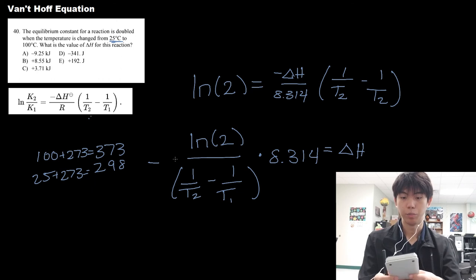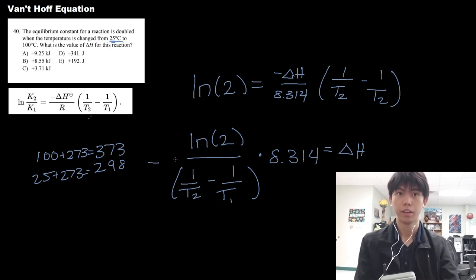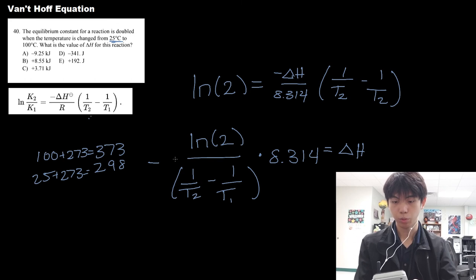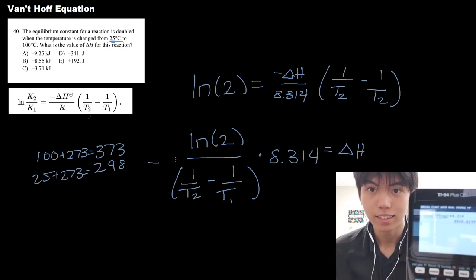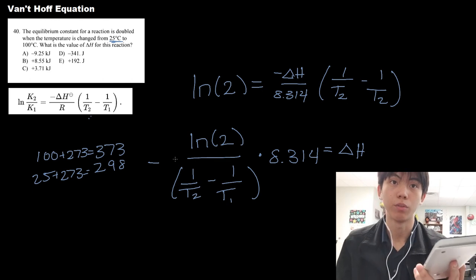And you multiply that by the R constant, which is 8.314. And you're given, as you can see here, 8,540.